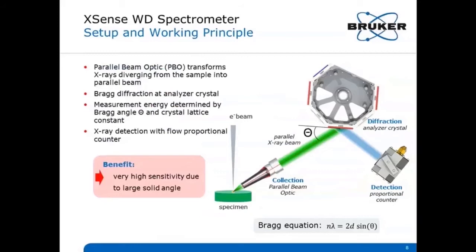This slide here shows the setup and working principle of the XSEN spectrometer. The parallel beam optic is positioned very close to the sample, and thus captures a large effective solid angle. The optic, which is a very important part of this parallel beam spectrometer, is close to the sample, so we capture X-rays with a high effective solid angle.